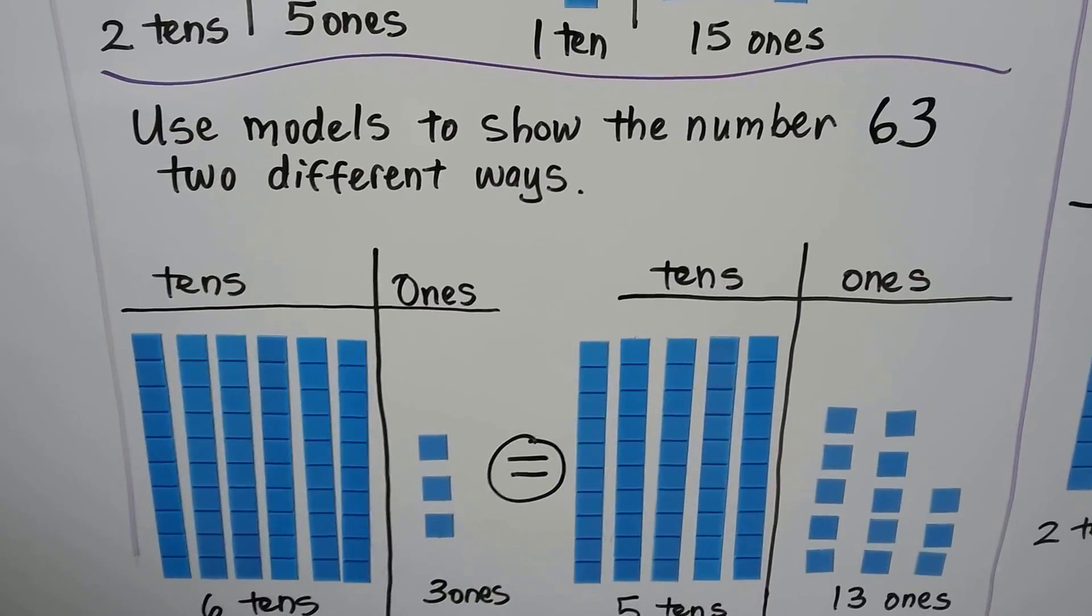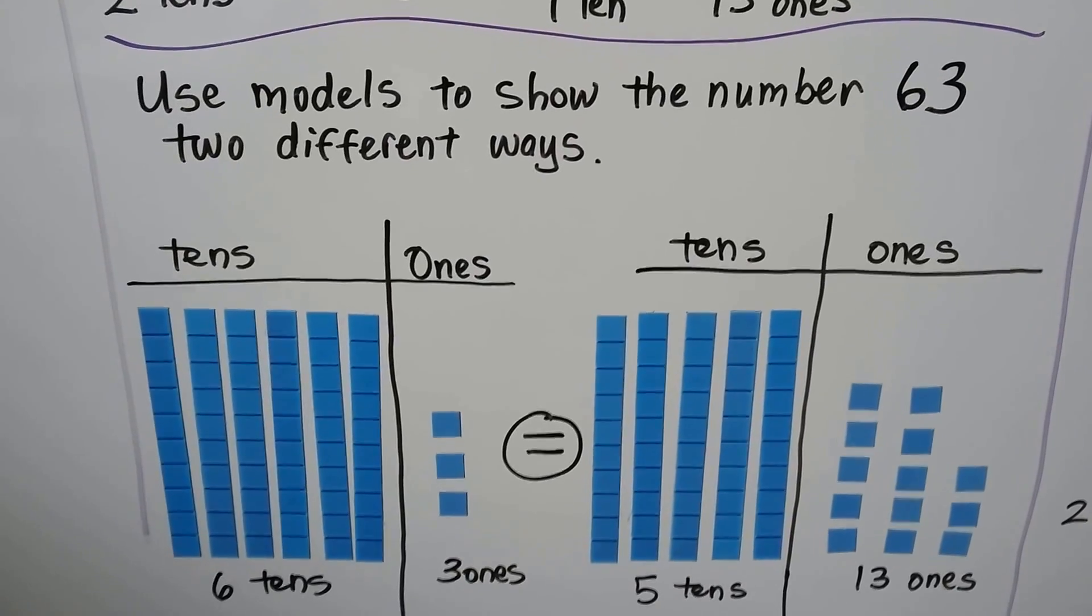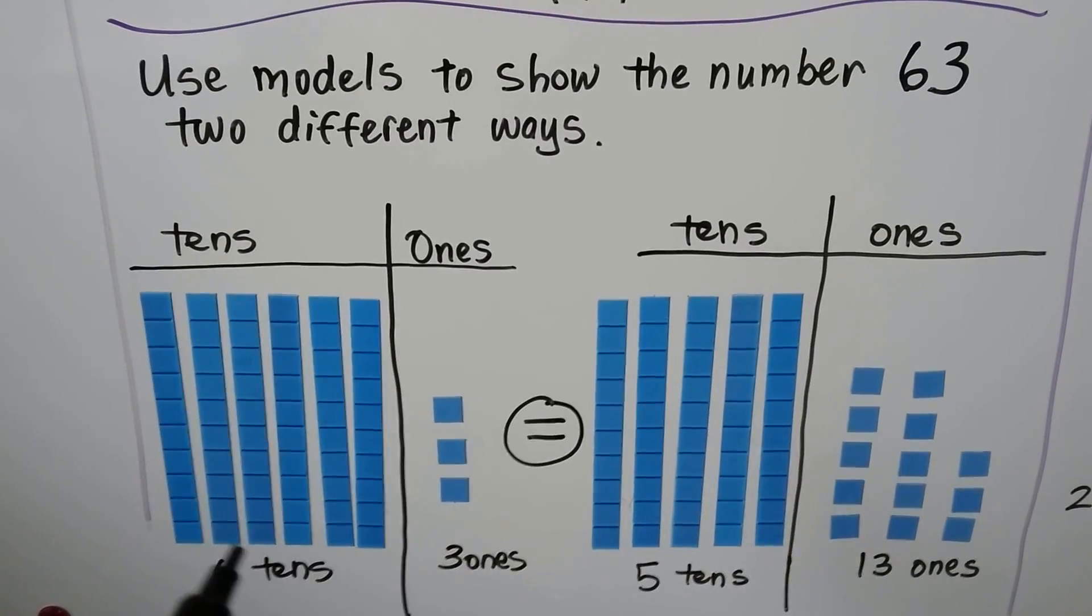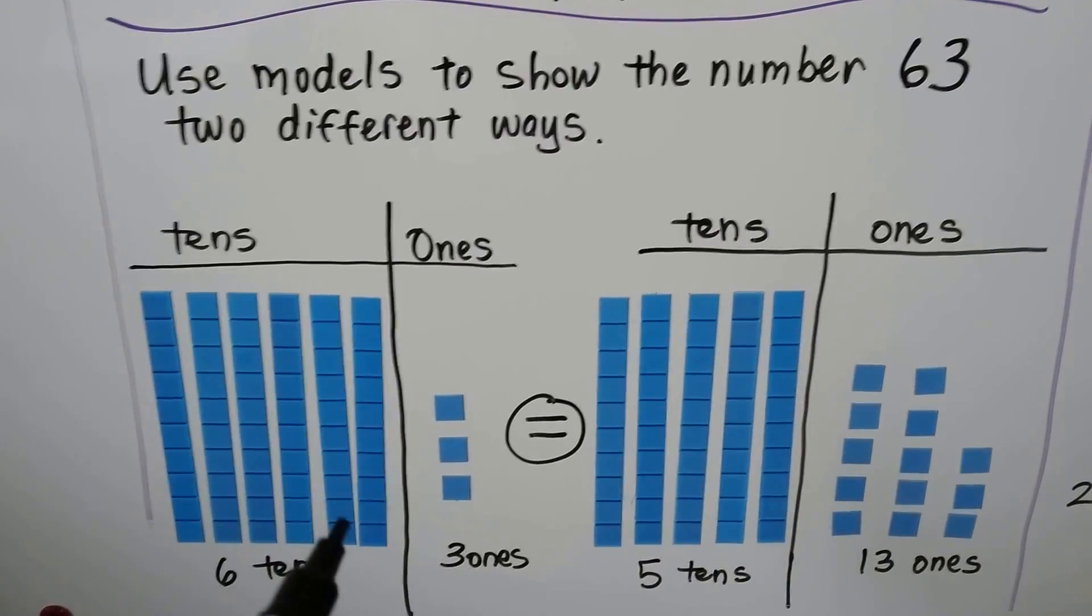We can use models to show the number 63 two different ways. 63 can be 6 tens, 1, 2, 3, 4, 5, 6...